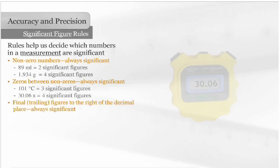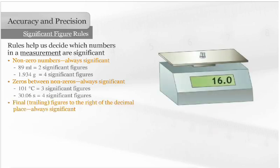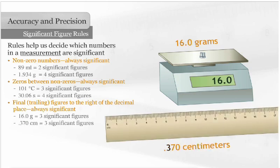All final or trailing figures to the right of the decimal place are significant, whether they are zero or non-zero. 16.0 grams and 0.370 centimeters both have three significant figures.